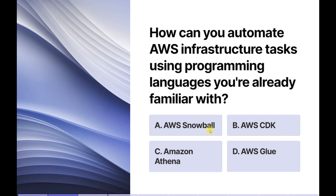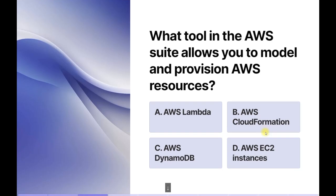AWS CDK is the Cloud Development Kit — a tool that allows us to automate tasks using familiar programming languages we already know. Amazon Athena is an interactive query service. AWS Glue is a fully managed ETL service. Here, what they are looking for is automating AWS infrastructure tasks, which can be done by AWS CDK. So the answer is option B, AWS CDK.